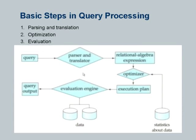The overall process of query execution: you submit a query, there is a parser which translates it into some internal representation — which could be relational algebra or some extension of it — and that is taken up by an optimizer which comes up with an execution plan, which it then gives to an evaluation engine. The optimizer uses statistics about the data to estimate the cost of different plans. It cannot actually run each plan — that is too slow — so it picks the one with the lowest estimated cost and outputs that as the optimal plan.